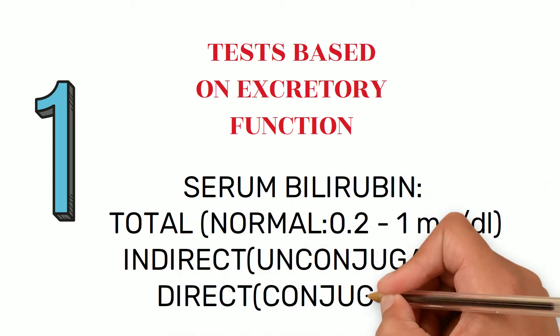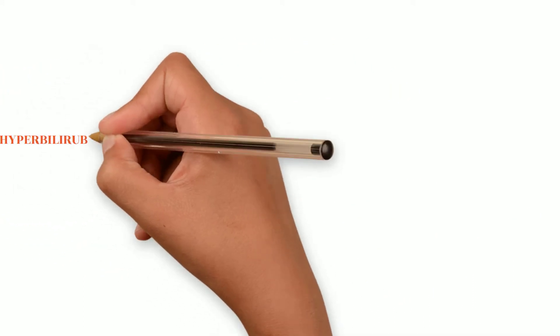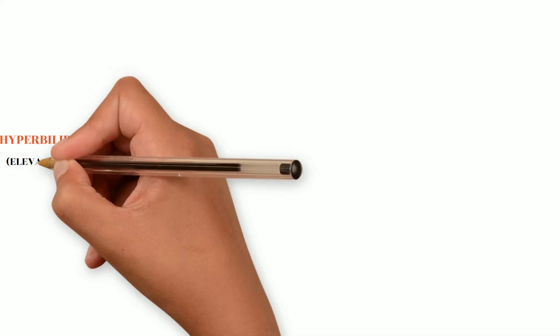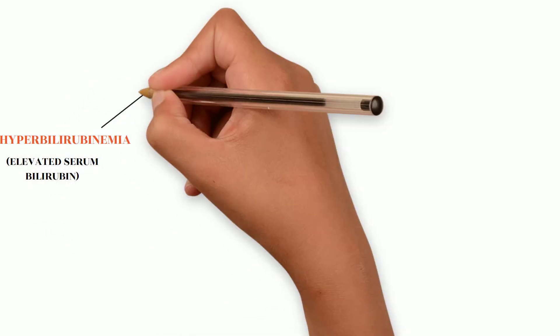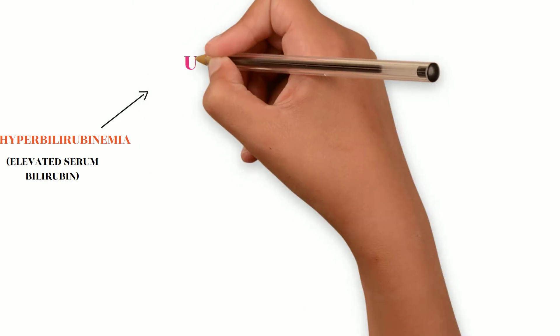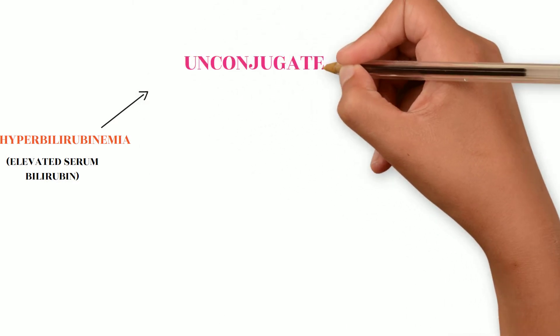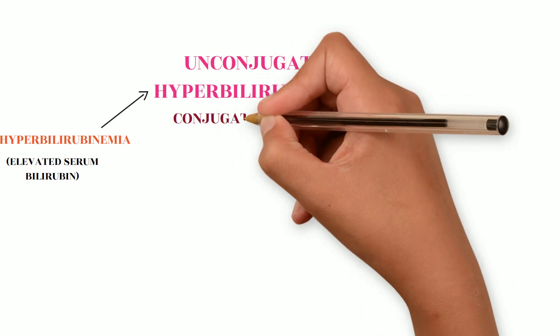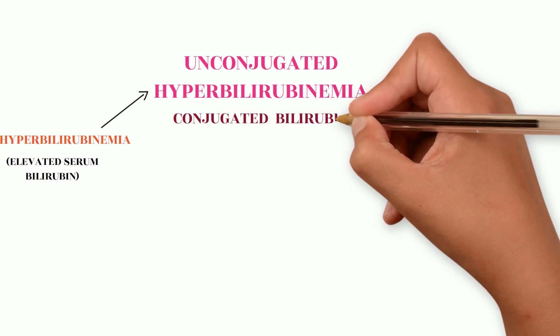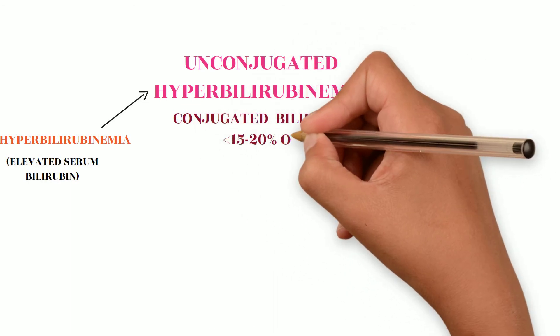and direct or conjugated fraction. Hyperbilirubinemia is elevated serum bilirubin. It could be unconjugated hyperbilirubinemia, where there is elevated unconjugated bilirubin and conjugated bilirubin is less than 15 to 20 percent of total bilirubin.